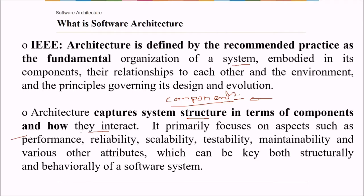these aspects are performance, reliability, scalability, testability, maintainability and various other attributes which can be key both structurally and behaviorally of a software system.